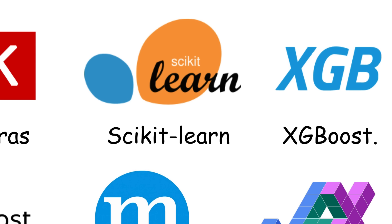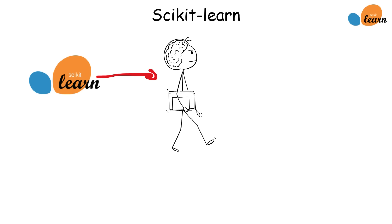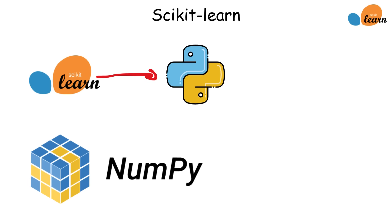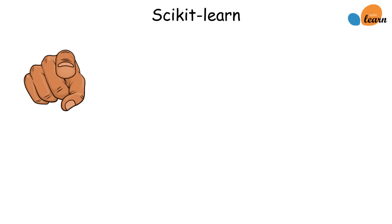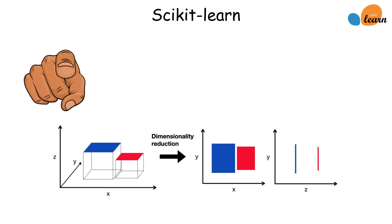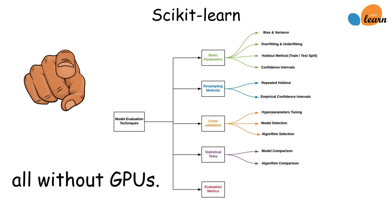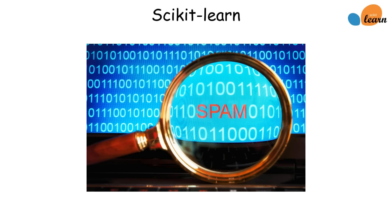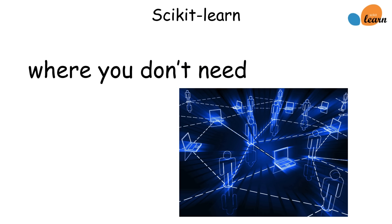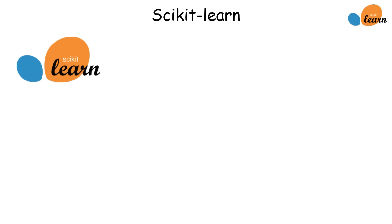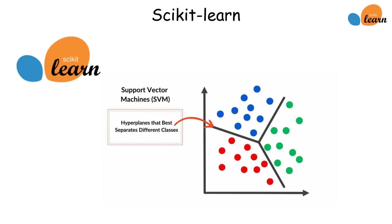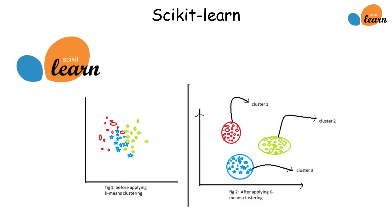Scikit-Learn is the go-to framework for traditional machine learning, not deep learning. It's built in Python and works beautifully with libraries like NumPy and Pandas. You can use it for regression, classification, clustering, dimensionality reduction, and model evaluation — all without GPUs. It's perfect for problems like spam detection, credit scoring, or recommendation systems where you don't need neural networks. Scikit-Learn focuses on classical ML models such as decision trees, random forests, support vector machines, and k-means clustering.